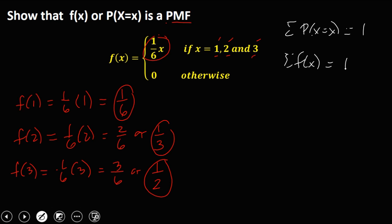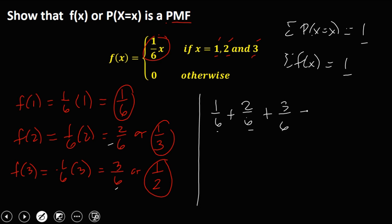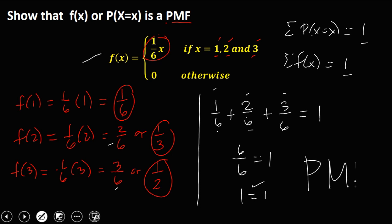Then to check if this one is a PMF, using the property that the sum of all probabilities equals 1: add all these probabilities — 1 over 6 plus 2 over 6 plus 3 over 6 should equal 1. So we have 1 plus 2 plus 3 equals 6, and 6 over 6 equals 1. So 1 equals 1; therefore, this given is a PMF.